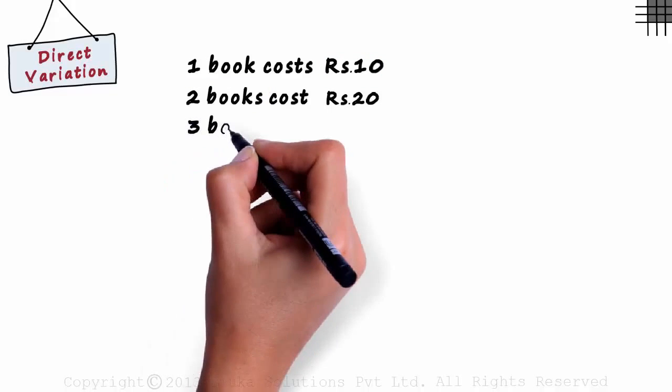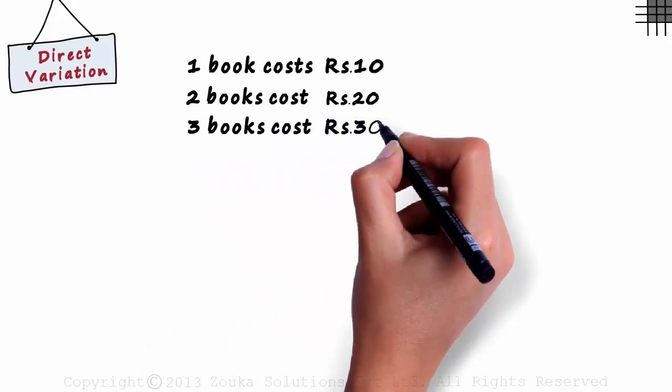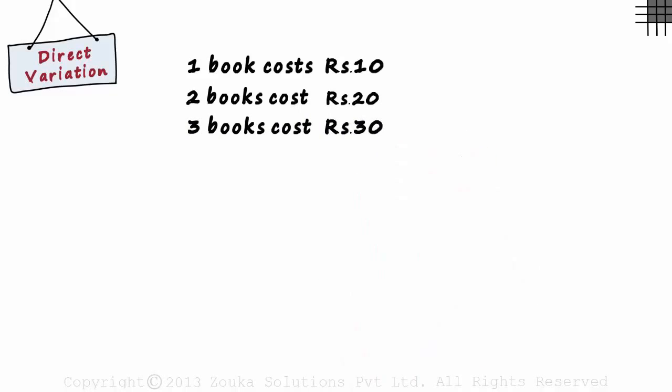And similarly, three books will cost three multiplied by 10, that is 30 rupees. You can see that as the number of books increases, the total cost also increases by the same factor. This is called direct variation. Wasn't it simple?